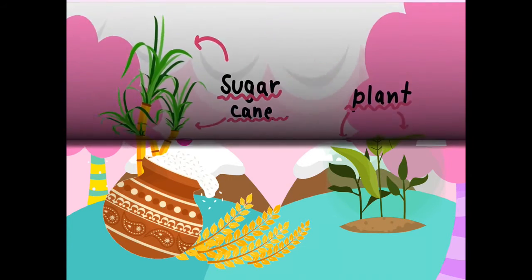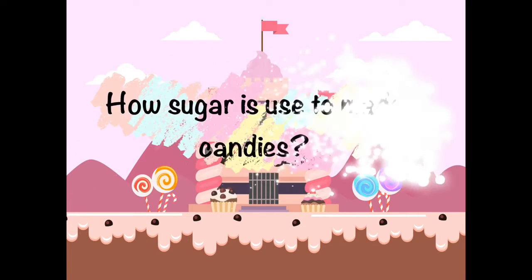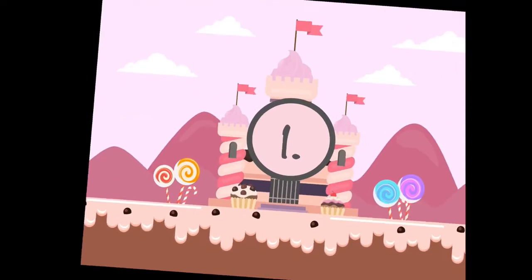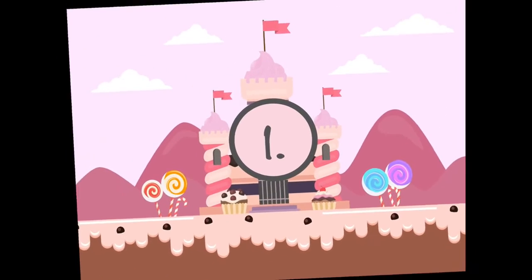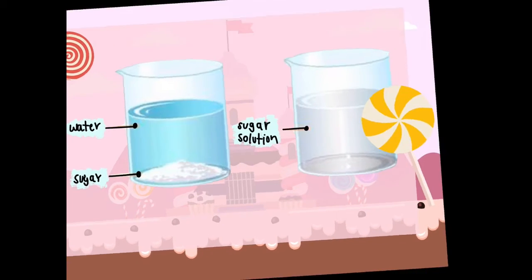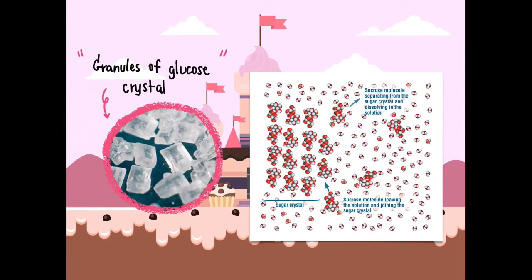How is sugar used to make candy? Different types of sugar have different ways of being used for making candies. The first step is dissolving sugar in water, and the second involves granules of sucrose.